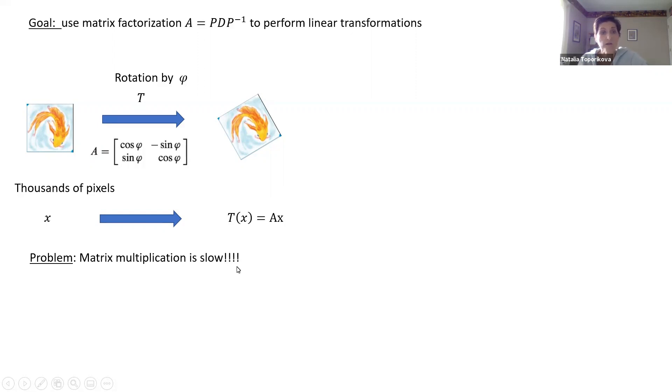So how can we speed it up? Because you probably rotate pictures every single day without thinking twice about it. So computers clearly do that somehow. The idea behind this operation is usually that we don't really directly multiply the matrices, but instead we use diagonalized matrices to conduct exactly the same transformation.